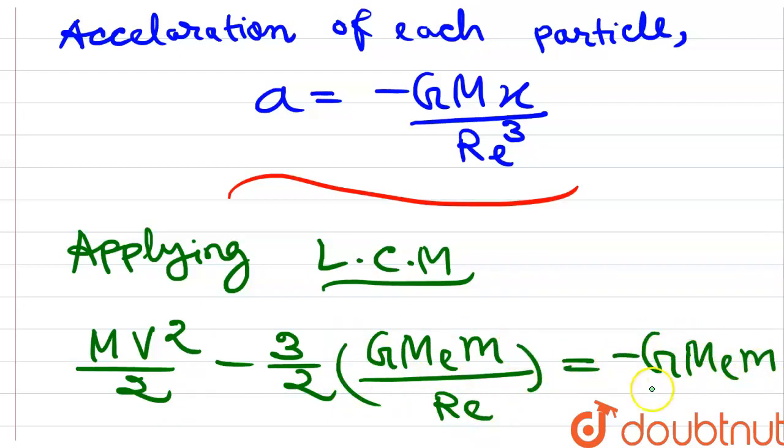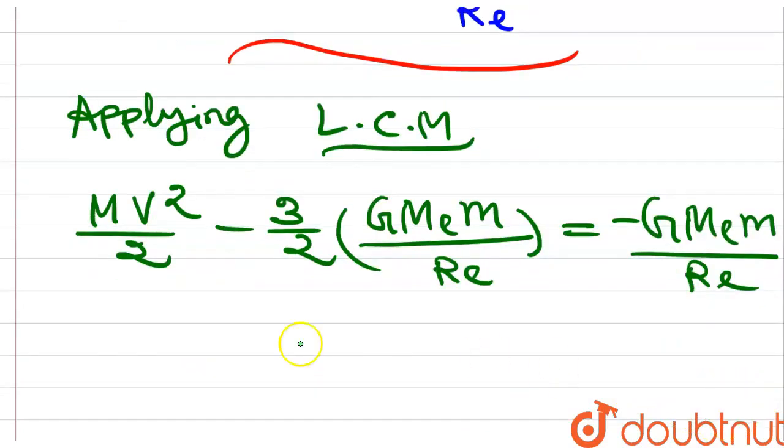times mass divided by radius of earth. This implies v is equal to square root of GMₑ divided by radius of earth, which is equal to escape velocity.